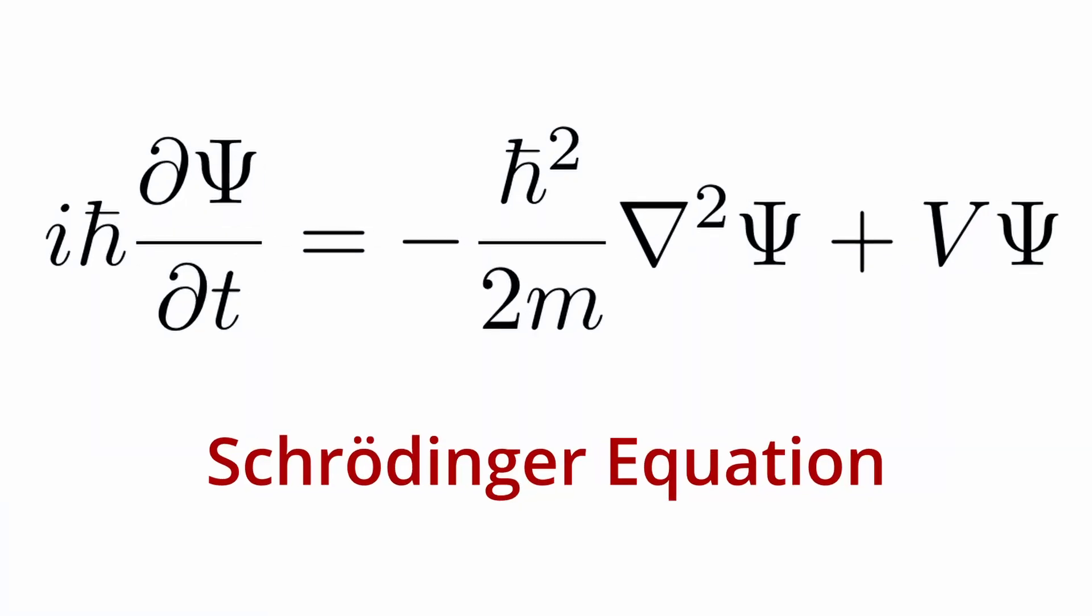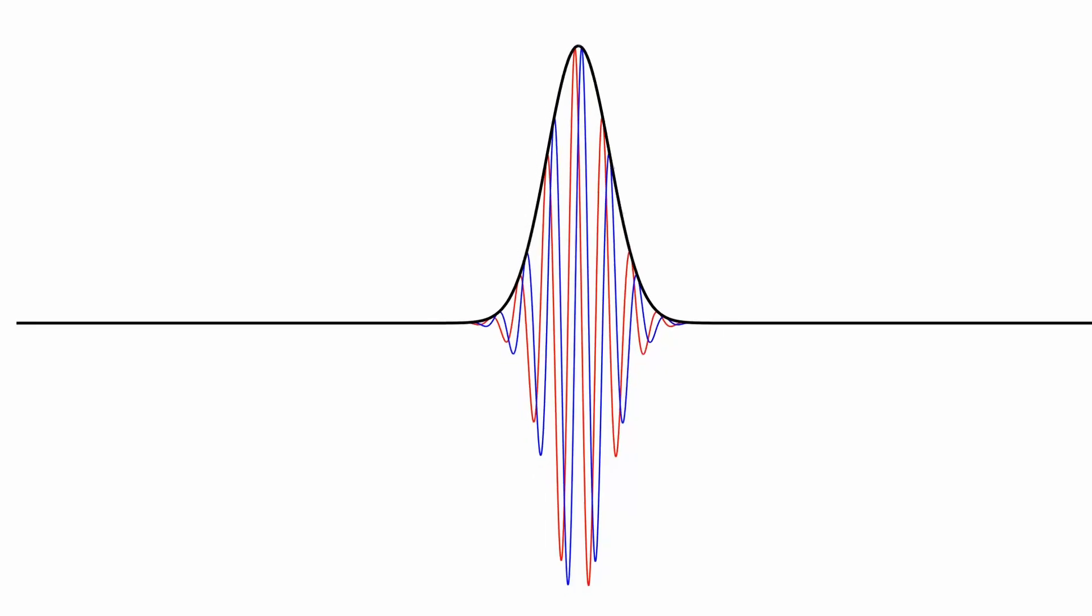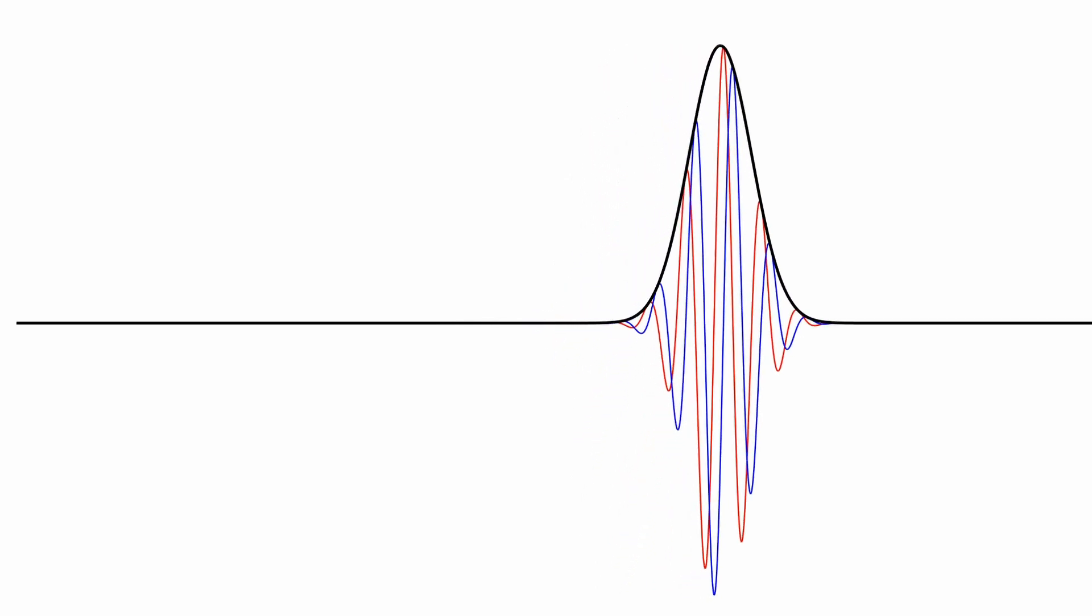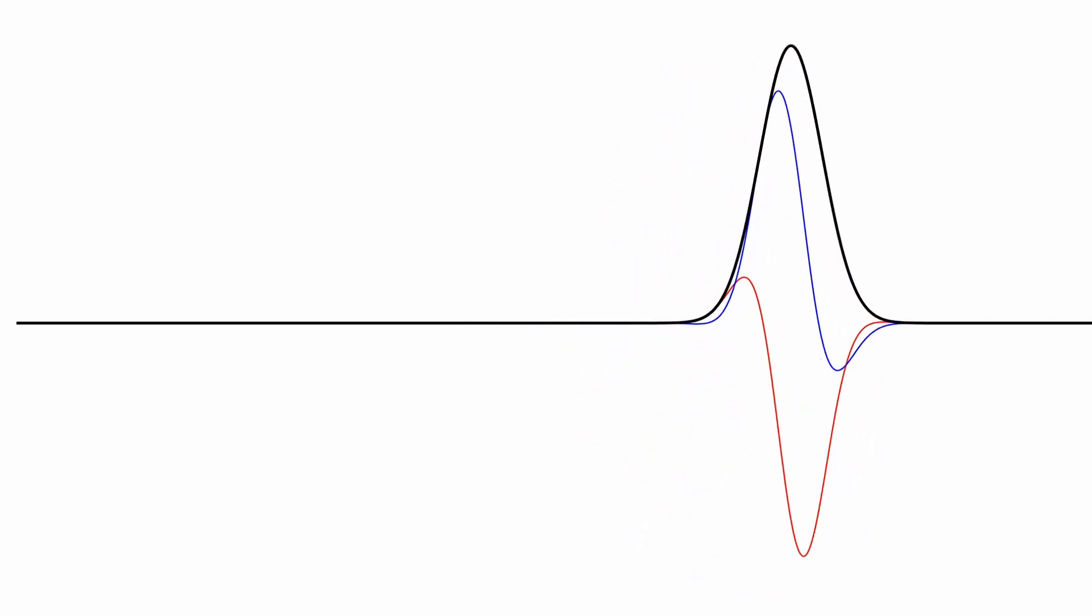At the heart of this quantum revolution lies the famous Schrödinger equation. This is a partial differential equation and even physics students struggle to understand it because of its complex mathematics. In this video I'll show you some solutions to the Schrödinger equation to give you some intuition and to see how it differs from classical mechanics.